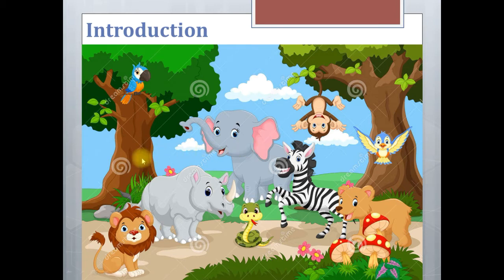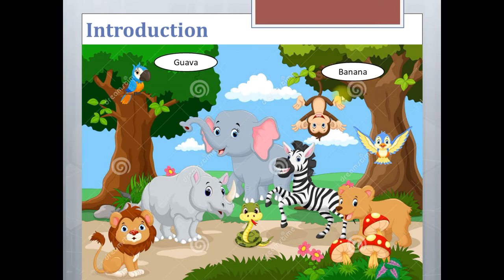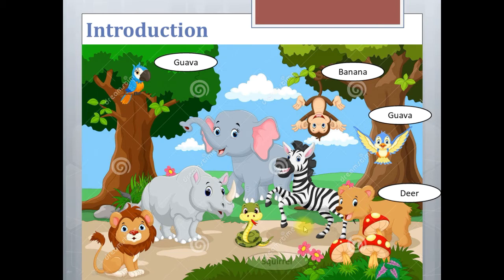Now we'll see what type of food these animals do consume. Parrots consume guava, guava is a type of fruit. Monkeys consume banana. Birds consume fruits. Guava is a type of fruit. Bears consume flesh of other animals such as deer.